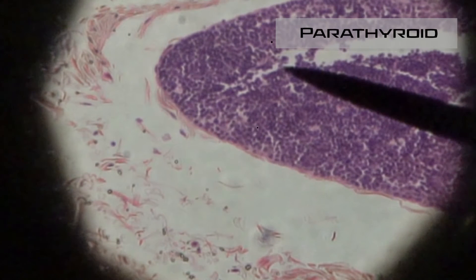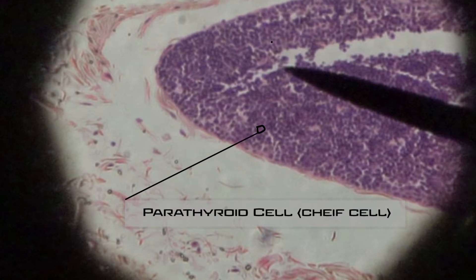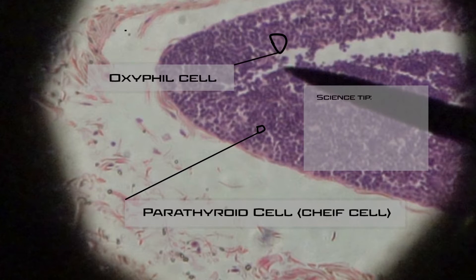Here at the parathyroid, you're going to see two types of cells. The first are the parathyroid cells, which are responsible for secreting parathyroid hormone, which increases calcium levels in your blood. You also see oxyphil cells here, though the function of those is still being debated.